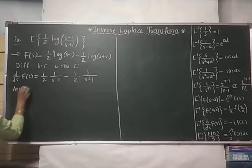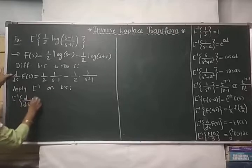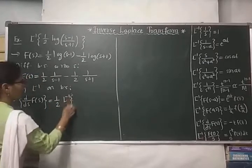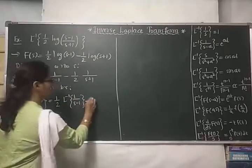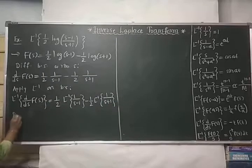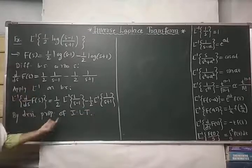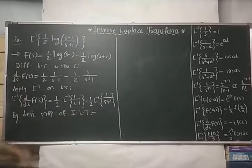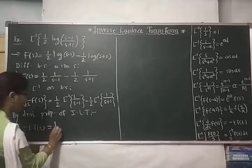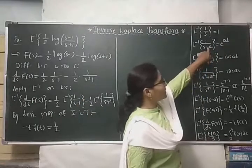Apply Laplace inverse on both sides. We get the Laplace inverse of d/ds{F(s)} equals the Laplace inverse of the right side. By the derivative property, the left side becomes −t·f(t), and the right side involves differentiating (1/2)[log(s−1) − log(s+1)], which gives (1/2)[1/(s−1) − 1/(s+1)].